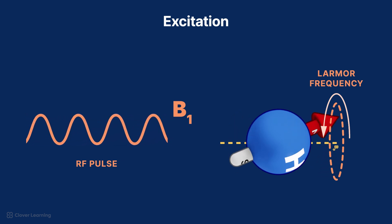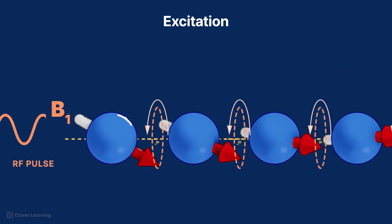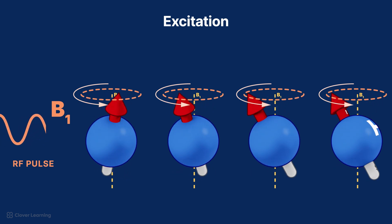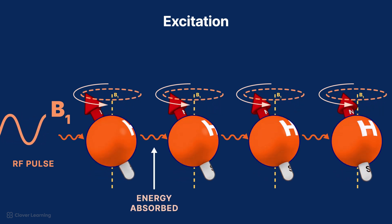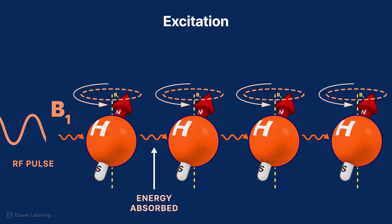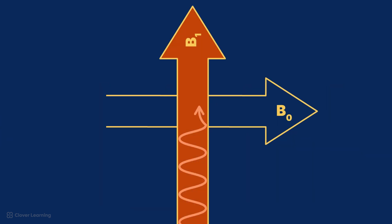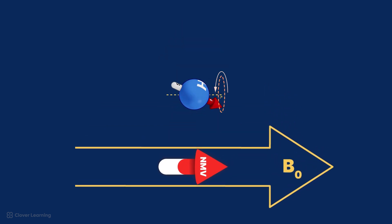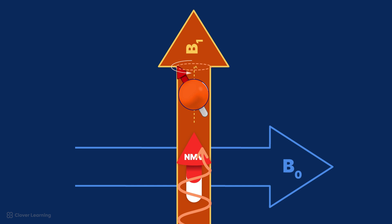We refer to this RF excitation pulse as B sub 1. The energy from the RF pulse temporarily disrupts the alignment of the hydrogen nuclei with the magnetic field, B sub 0. The energy is absorbed by the hydrogen nuclei and causes the magnetic moments of the hydrogen nuclei to precess in phase, or in sync, with one another. The RF excitation pulse comes in at a 90-degree angle to the longitudinal plane and B sub 0. When only exposed to B sub 0, the net magnetic vector, or NMV, is in alignment with the longitudinal plane. When the RF excitation pulse excites the NMV at a 90-degree angle, it is tilted or flipped into the transverse plane.